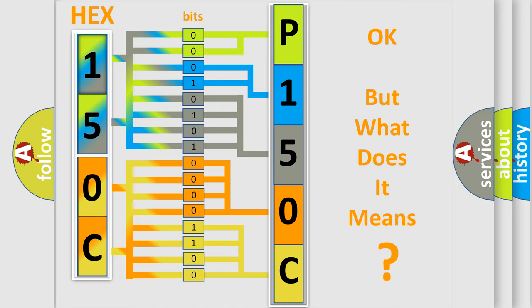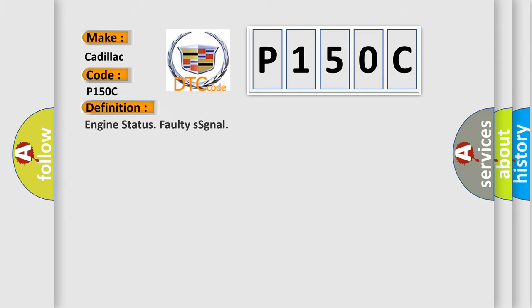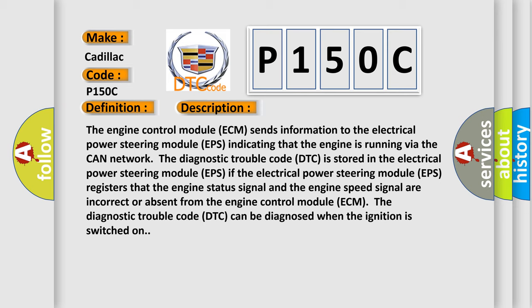We now know in what way the diagnostic tool translates the received information into a more comprehensible format. The number itself does not make sense to us if we cannot assign information about what it actually expresses. So, what does the diagnostic trouble code P150C interpret specifically for Cadillac car manufacturers? The basic definition is: Engine status faulty SSG NAL.